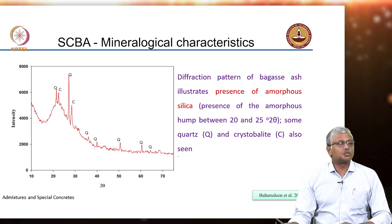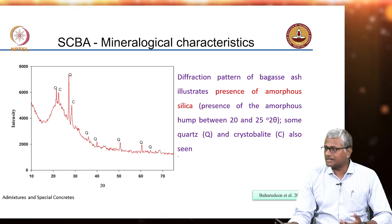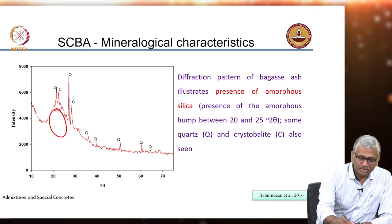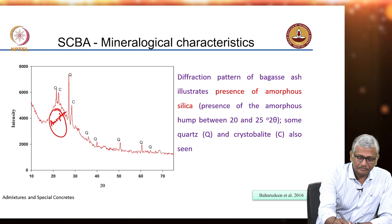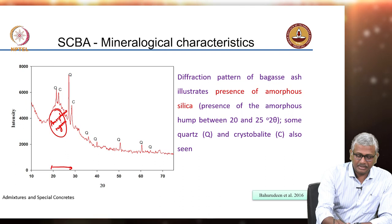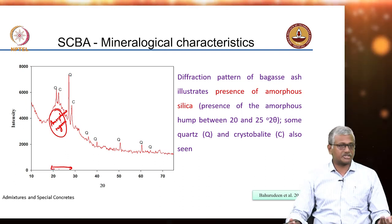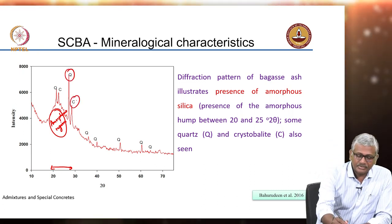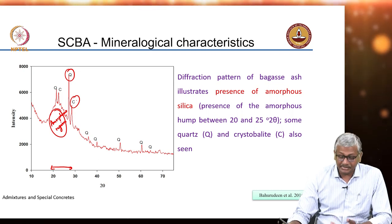Mineralogically, if you do an X-ray diffraction experiment on bagasse ash, you will see very few crystalline components — there will be a large amorphous hump, similar in region to that of fly ash. You do also see some peaks of quartz and cristobalite.